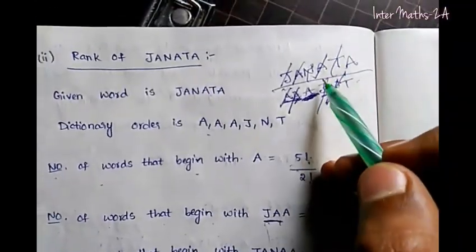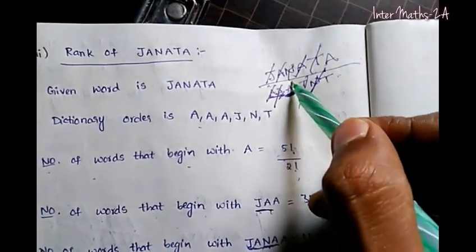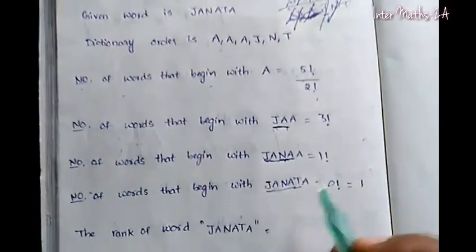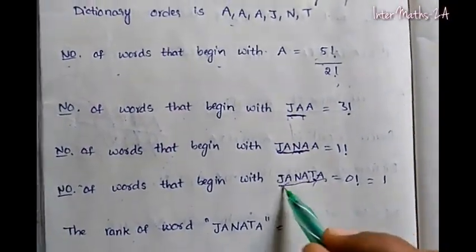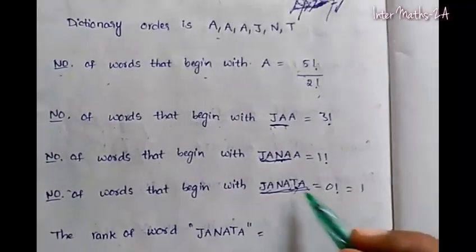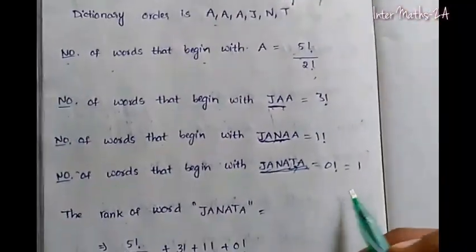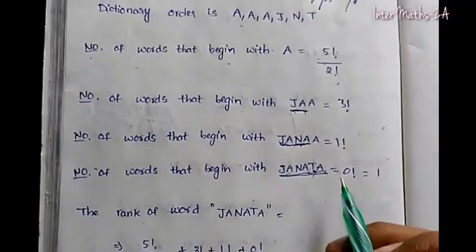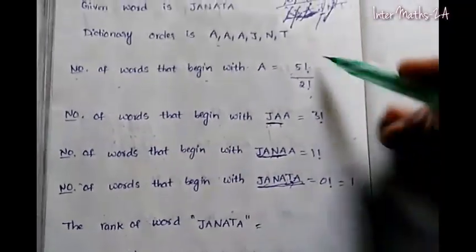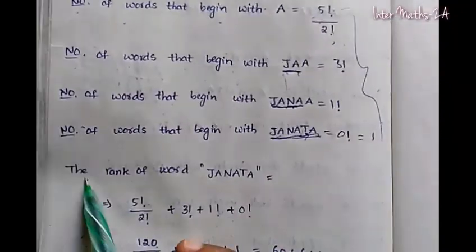T cannot cancel here. In the next letter we use A to cancel. A cannot cancel further — it will fix. So all letters are fixed and we add the contribution. We add J and A to build the rank of JANATHA.